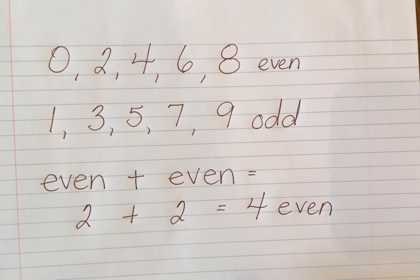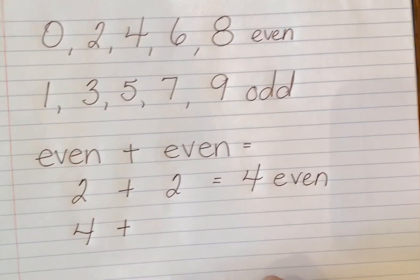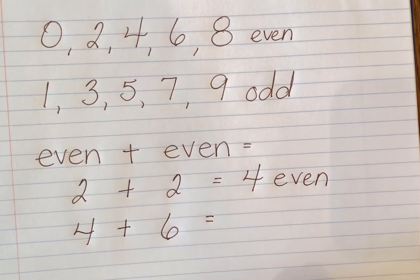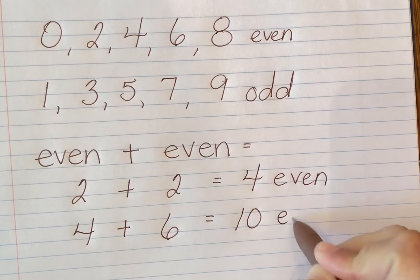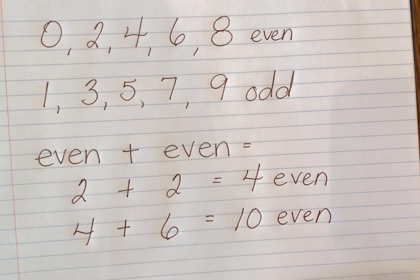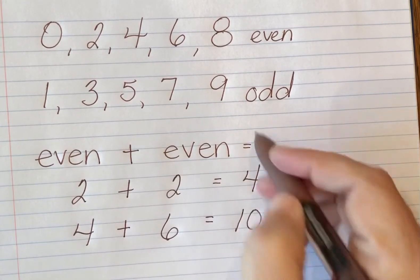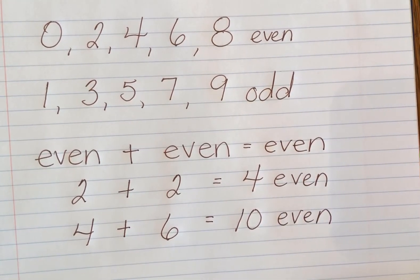Let's try another example. This time let's use four, which is an even number, and six, which is another even number. Four plus six equals ten. Ten has a zero in the ones place, so it's also an even number. The pattern here is: an even number plus an even number always gives an even sum. Even plus even equals even.